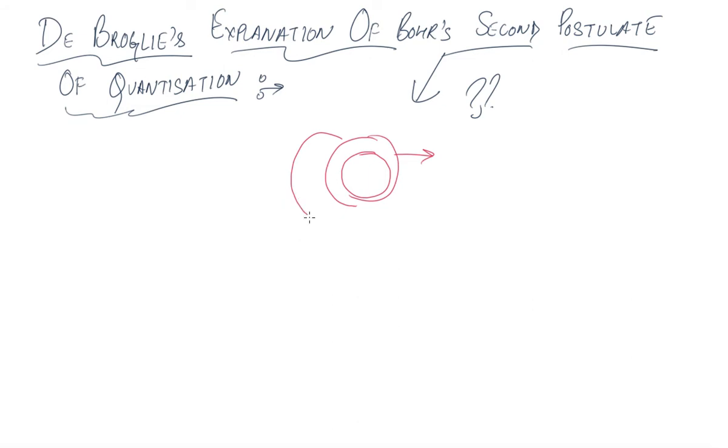Only then do electrons rotate around them. He also added in the second postulate that they rotate in such a way that they are in a stable state. This is the postulate.